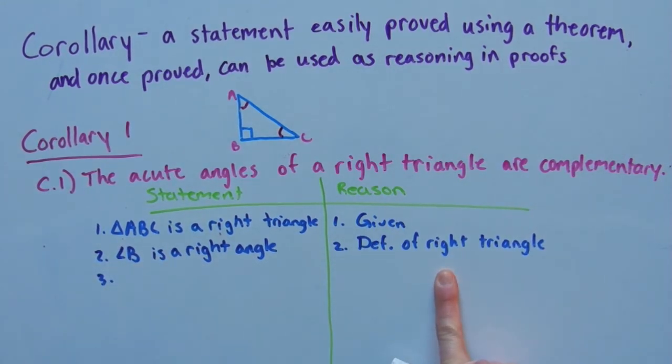And that's by the definition of a right triangle. And since it's a right angle, by the definition of a right angle, the angle B is equal to 90 degrees.